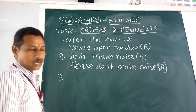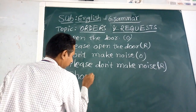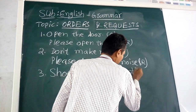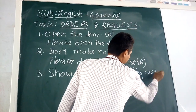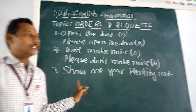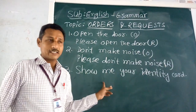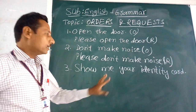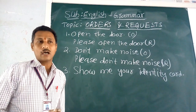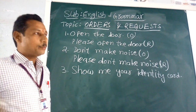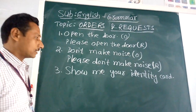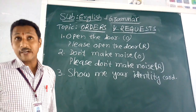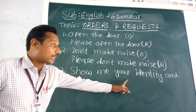One more example: 'Show me your identity card.' This sentence is mostly used by people sitting near the reception in a meeting hall or any office. They ask people who are entering inside. Security or reception people will ask, 'Show me your identity card.' Suppose VIPs come — saying 'show me your identity card' directly may make them feel uncomfortable, so this is like an order.